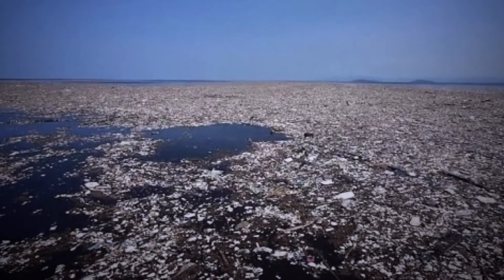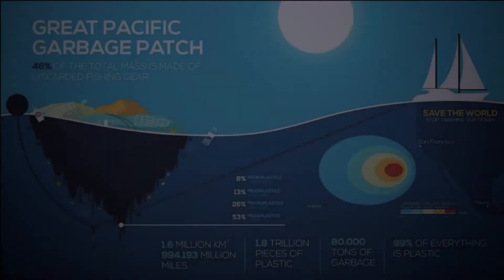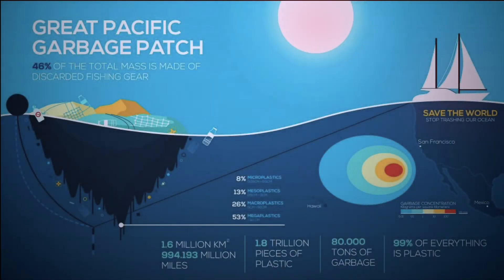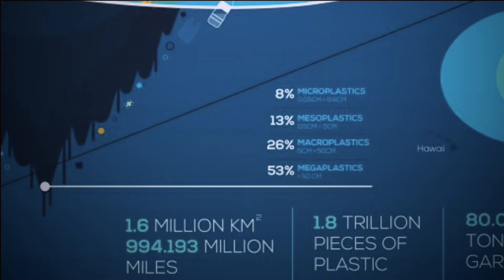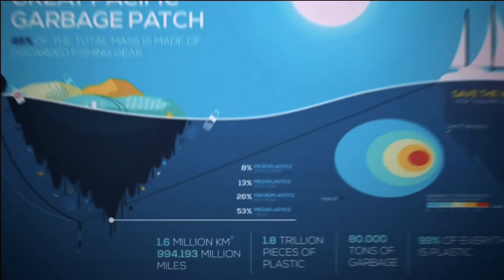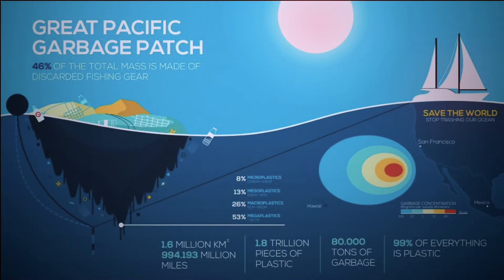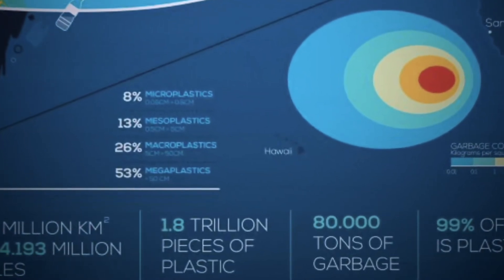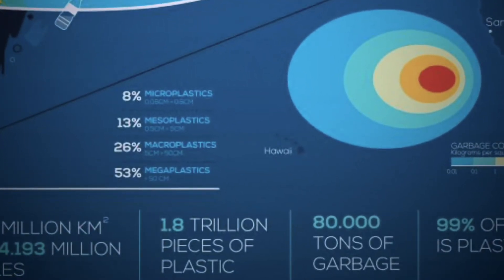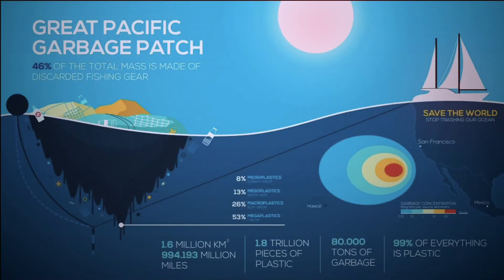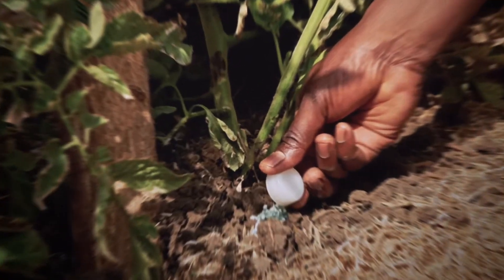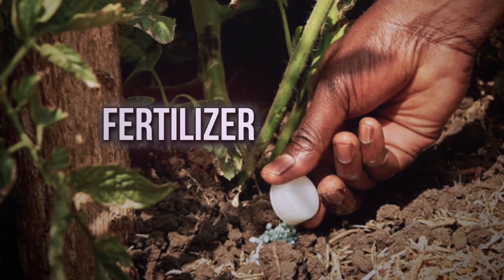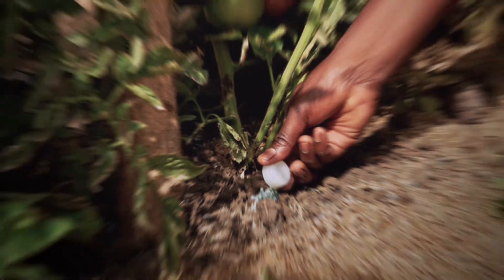Researchers from the Ocean Cleanup Project claimed that the patch covers 1.6 million square kilometers. The plastic concentration is estimated to be up to 100 kg per square kilometer in the center, going down to 10 kg per square kilometer in the outer parts of the patch. Fertilizers can be bad for the soil too, because they release toxic elements that eventually infect the soil and the water.